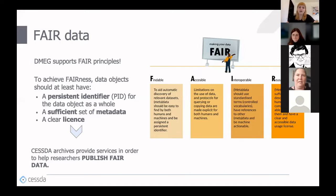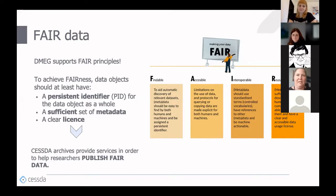The Data Management Expert Guide is designed to support FAIR principles. To achieve fairness, you should have at least three things: a persistent identifier—for example a DOI—that identifies your data object, a sufficient set of metadata, and a clear license. Data archives are the ones that provide services in order to publish your FAIR data.